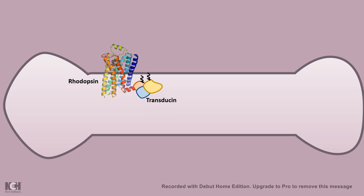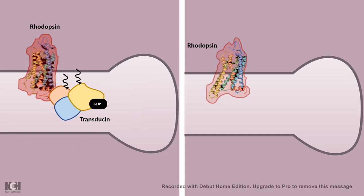Transducin has three G-protein subunits: alpha, beta and gamma, just like a GS signaling regime. When light hits, a few things happen.